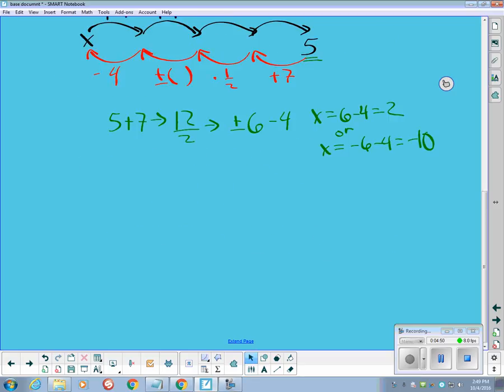Okay, what I like to do then at that point is draw a number line, and we're going to mark the important points on the number line, which are 2 and negative 10.